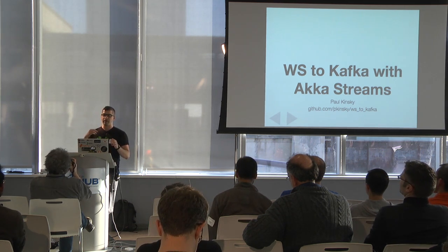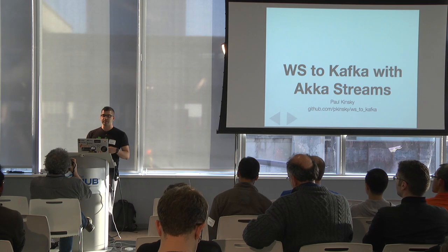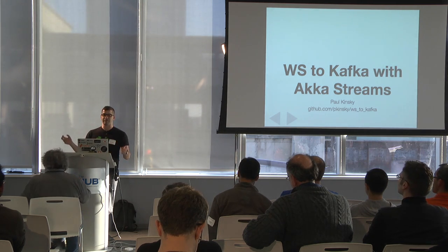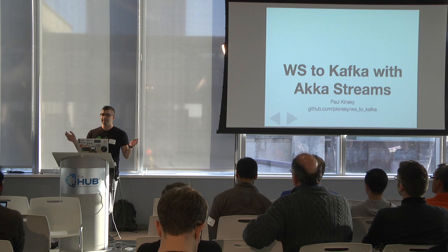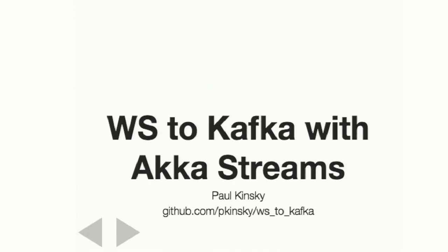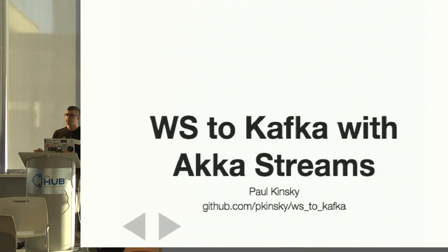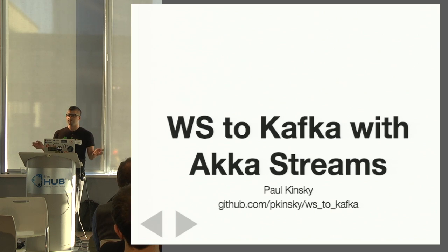I've done a few talks where I spend a lot of time getting into how Akka Streams works, and then it's like, here's how you parse a CSV file as a stream, and no one really cares about that. They can do that in a lot of simpler ways. So for this talk, I'm going to build a really small WebSocket server that just accepts WebSocket connections, publishes all of the WebSocket messages received via that connection to Kafka via a single stream.